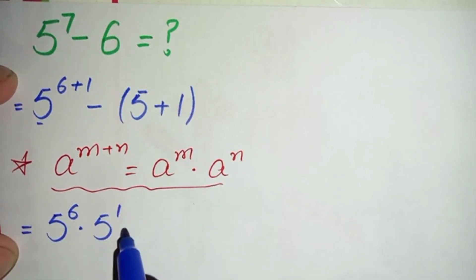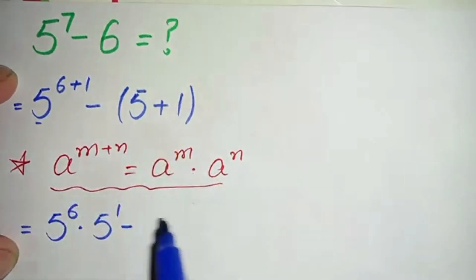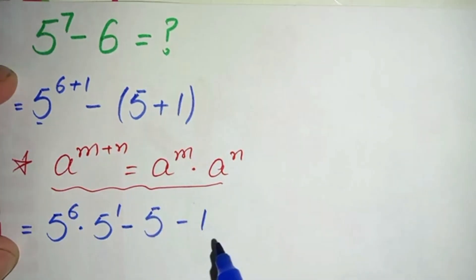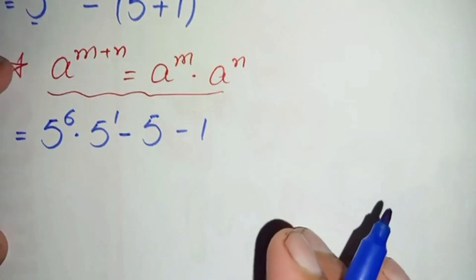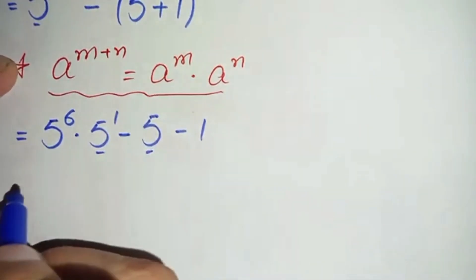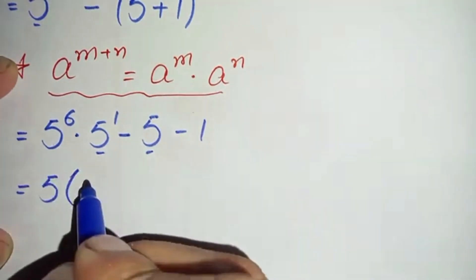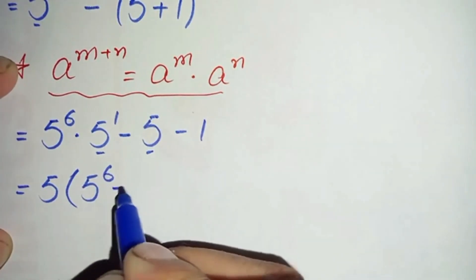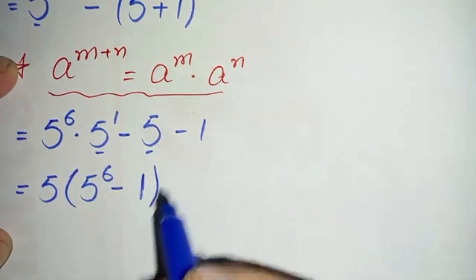Minus — we will multiply this negative sign inside the parenthesis, so it will become minus 5 minus 1. Now we will take 5 common from the first two terms. Taking 5 common, 5 raised to power 6 is left, minus here only 1 is left.